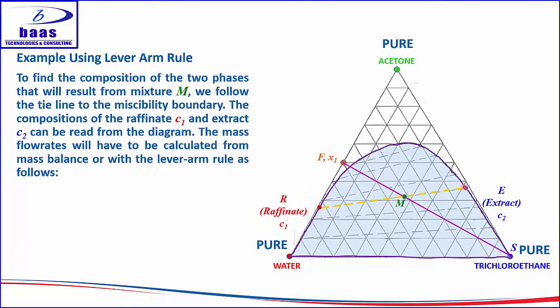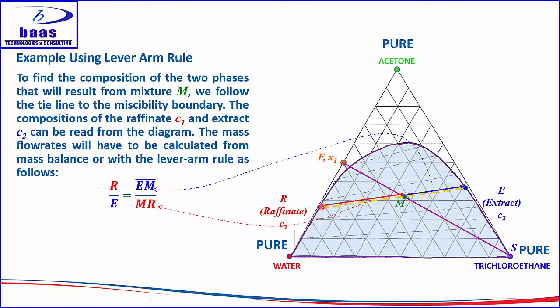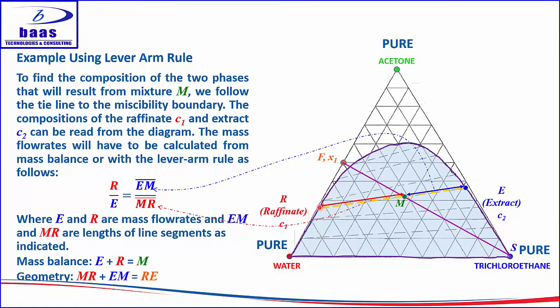To find the compositions of the two phases that result once mixture M separates, we follow the tie line toward the miscibility boundary. The compositions of the raffinate and extract can be read directly from the diagram. The mass flow rates are calculated from the mass balance or with the lever arm rule: the mass flow rate of R over the mass flow rate of E equals line segment EM over line segment MR. Additionally, E plus R equals M, and the length of MR plus EM equals the length of ER.